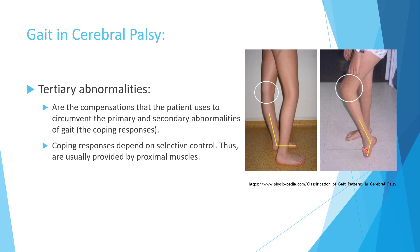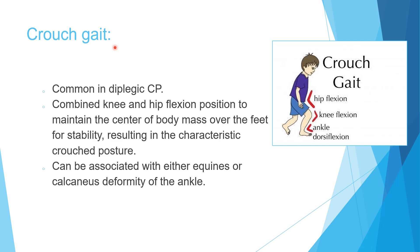Tertiary abnormalities are coping mechanisms. For example, a child with equinus may walk in equinus, or may hyper-extend the knee to put the whole foot on the floor. Since children have more selective proximal control, tertiary compensations are usually proximal — such as hip circumduction to clear the foot from the floor.